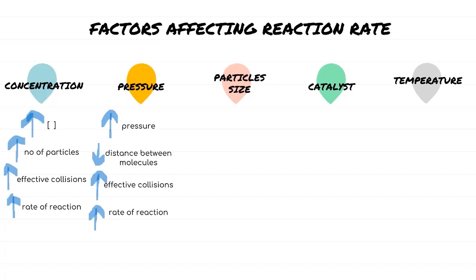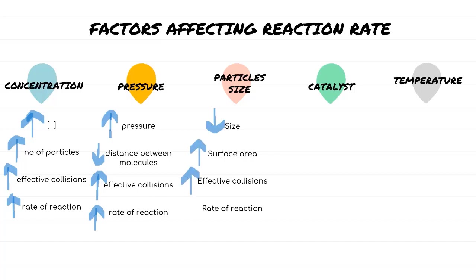Next is particle size. The smallest size of particles will have a bigger surface area, leading to more effective collisions as well as a higher rate of reactions. We've already learned about these factors in Chapter 5 last semester in SK015, so I'm going to go through this really quickly.